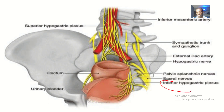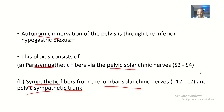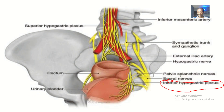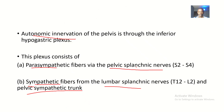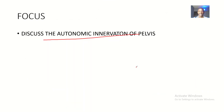To recap: the inferior hypogastric plexus is divided into the sympathetic and parasympathetic. The parasympathetic are the pelvic splanchnic nerves, while the sympathetic are the lumbar splanchnic nerves and the pelvic sympathetic trunk.